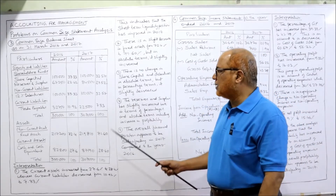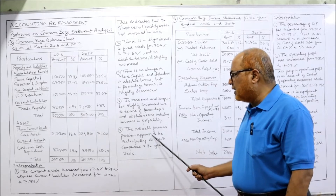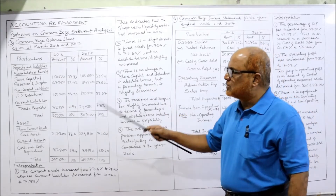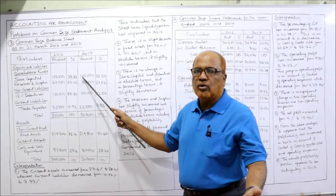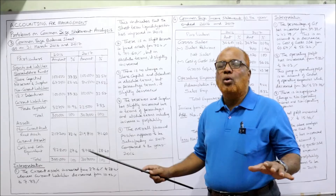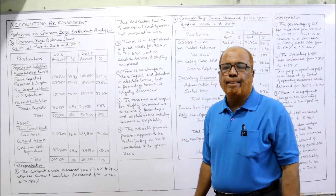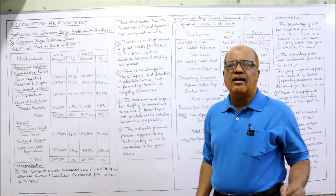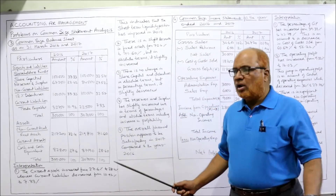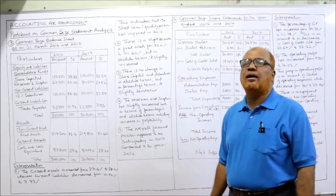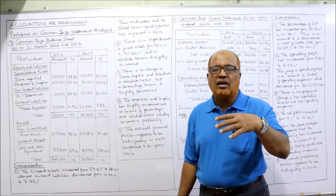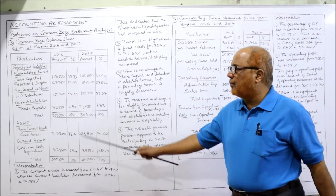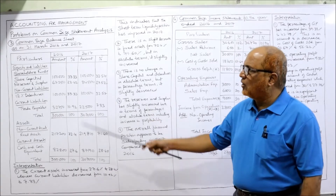There is no change in share capital and debentures in absolute terms — both remain at 1 lakh each. However, in percentage terms they slightly decreased from 33% to 32%. The overall financial position appears to be satisfactory. In 2017, compared to 2016, the financial position has slightly improved. This concludes problem number 3.